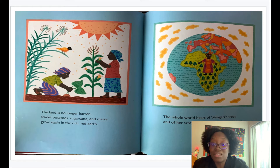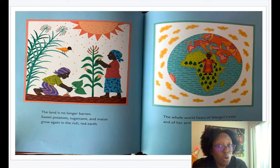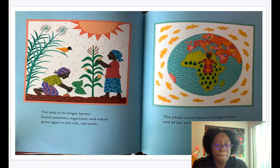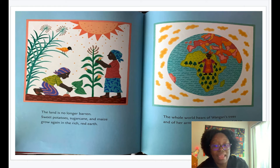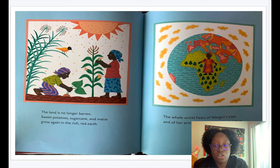When something is barren, in this case with the earth, it means that the earth is no longer able to produce fruit or vegetables. But now it can. The author tells us that sweet potatoes, sugarcane, and maize — which is corn — are growing again in the soil. That is the information the author gives us to let us know that the land is no longer barren.